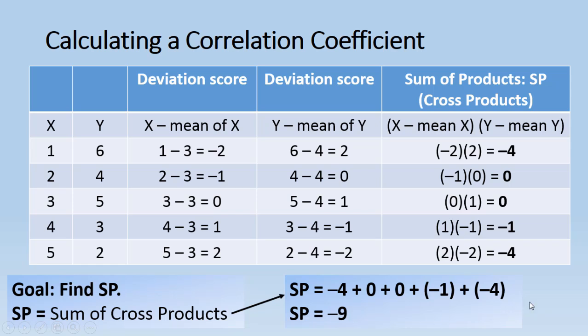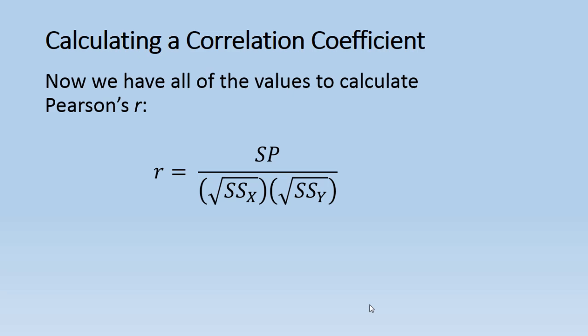A very quick review. We found the mean, then we found the deviation scores, and then we squared them and added them together. And then our last step here, we found the cross products and summed those up. So we found that sum of the products or SP. So we have everything we need to calculate our correlation. So here's our formula for the correlation coefficient of Pearson's r. Sum of the products divided by square root of SS X times square root of SS Y. And we found all of these values, so we're ready to go.